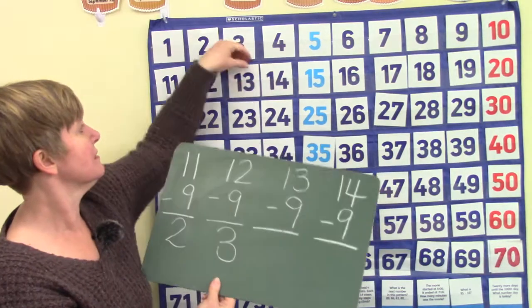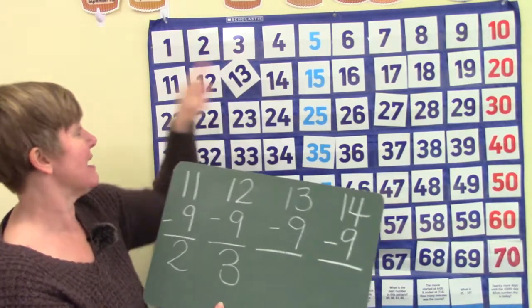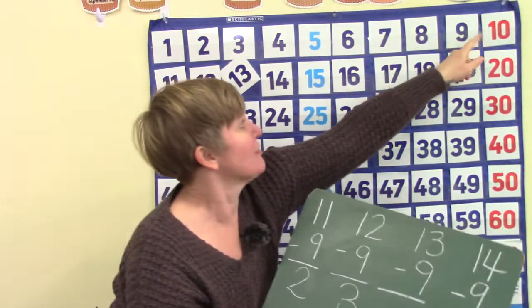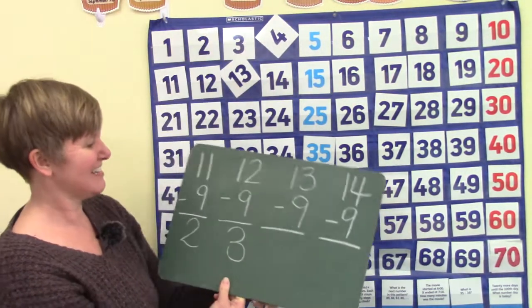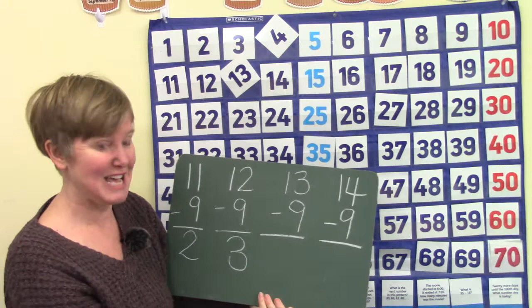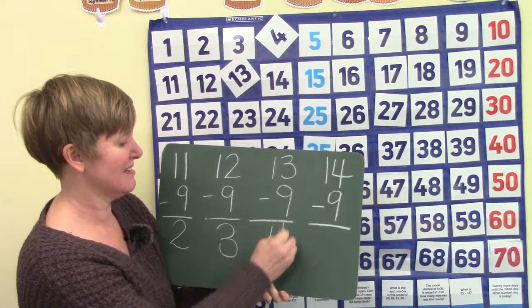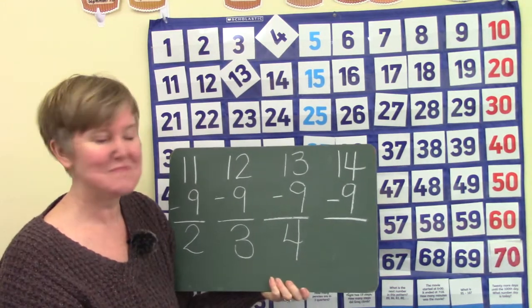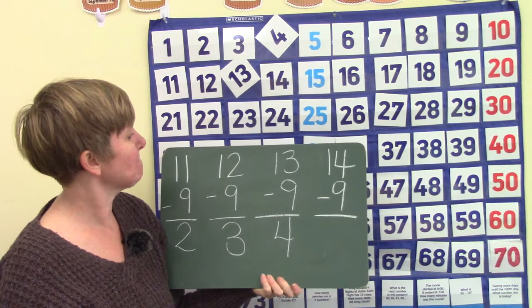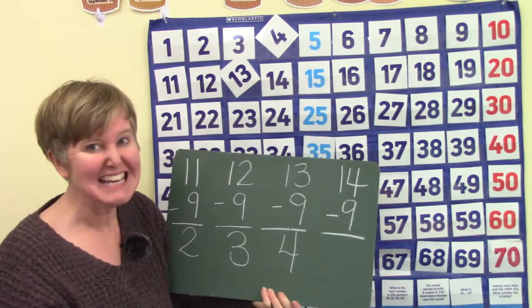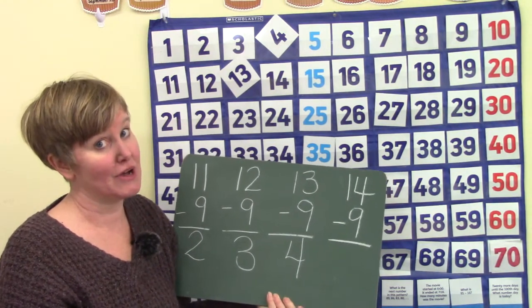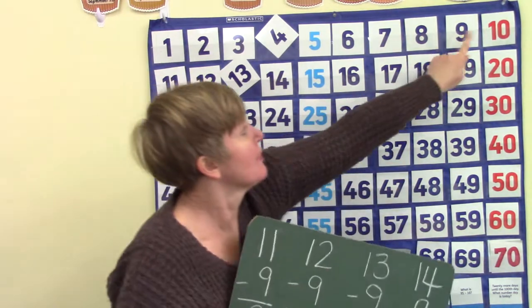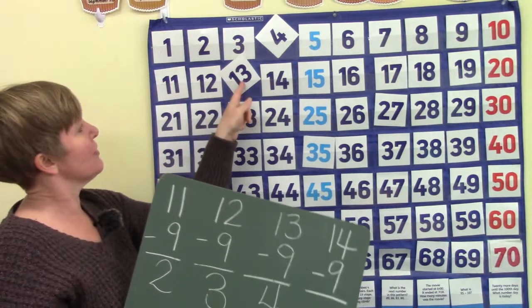Well now we're going to start at thirteen and we're going to count back nine. One two three four five six seven eight nine. Thirteen take away nine is four. I wonder if we started at nine and we counted up to thirteen if that would also give us four. One two three four.